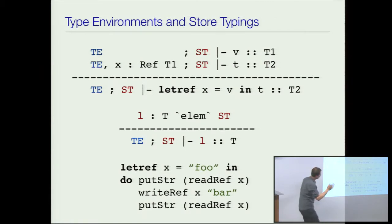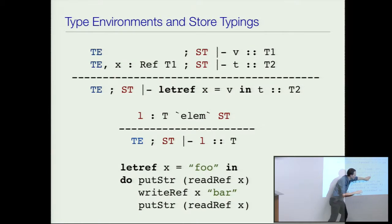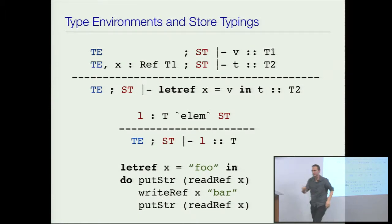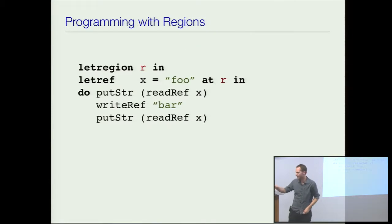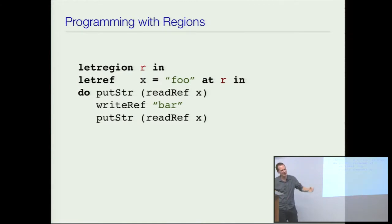So we've got these two phases. We've got binders which are in the program, and we have locations which are in the running program. Locations sort of mean pointers. Now we've got mutable references, and I'm going to extend my language so I can talk about regions as well — region typing.